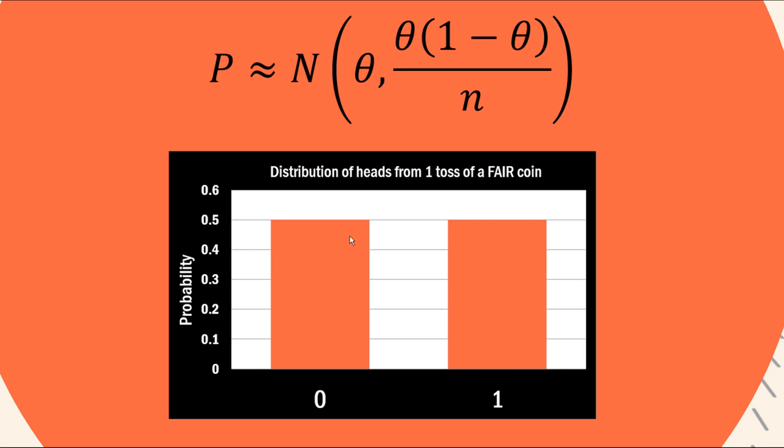Now this is the extreme example where n is 1 and quite clearly this distribution is very discrete and absolutely not normal. So there's no way we could be describing the distribution of this sample proportion by this formula up here.